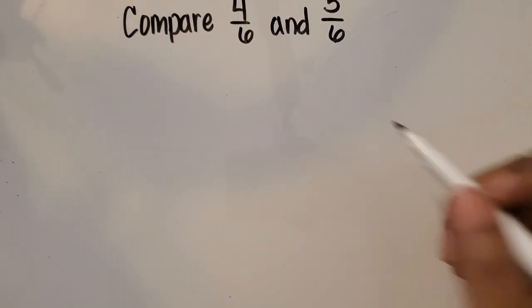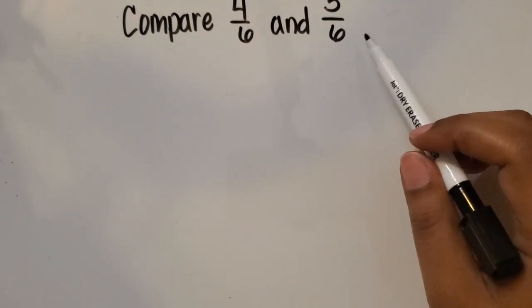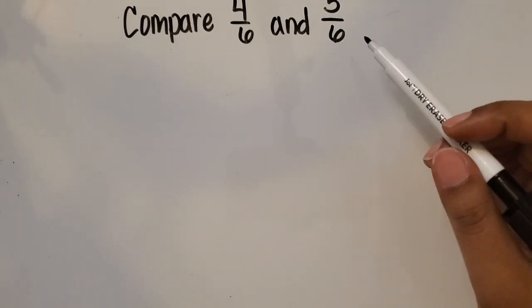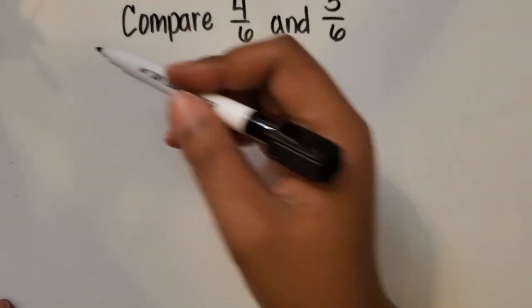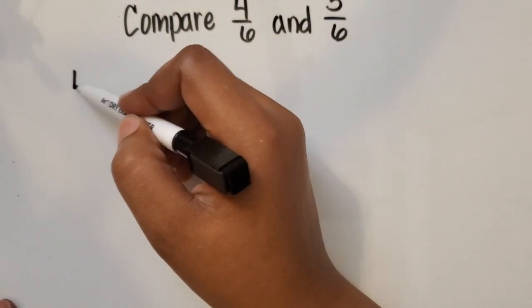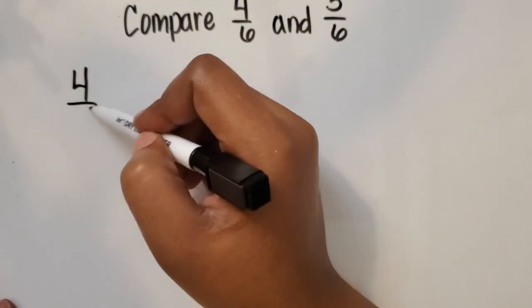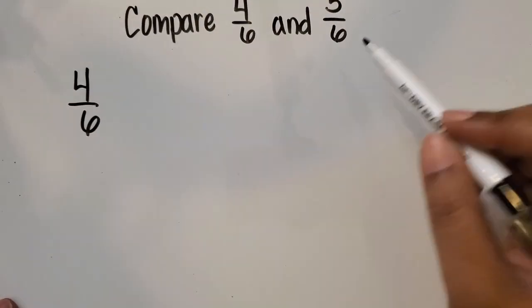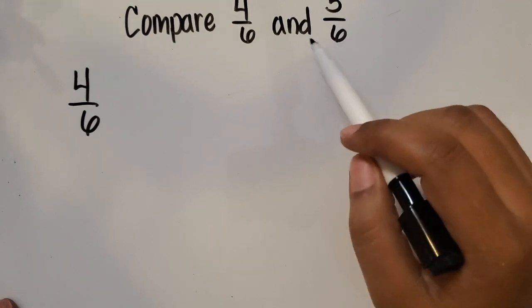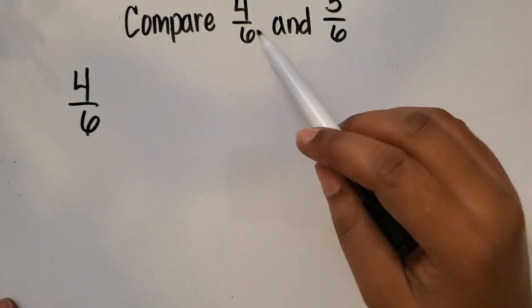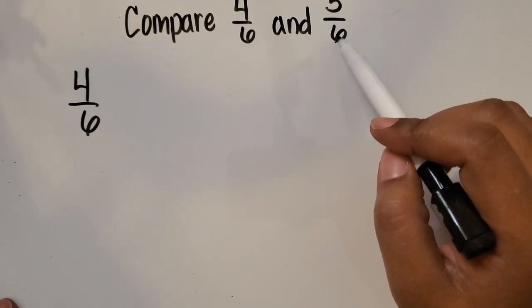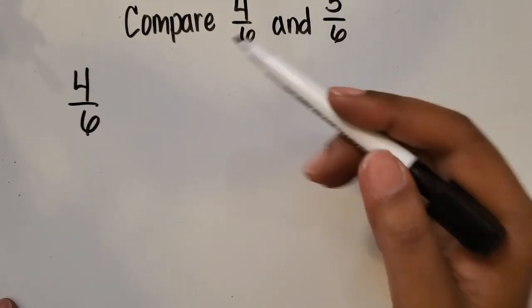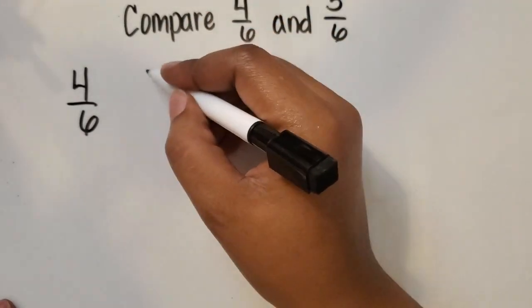We're going to compare 4/6 and 5/6 using a rectangular area model. Let's start with 4/6. If you look at the fractions, they have the same denominator but different numerators.